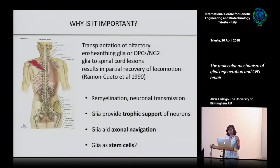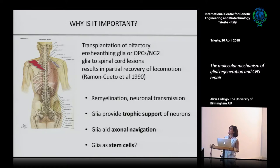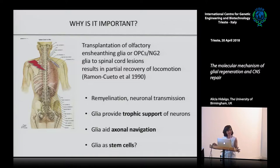Why is this so important? Transplantations of olfactory ensheathing glia, originally discovered by Ramon Cueto from the end of the 80s and 1990, were very regenerative - they led to recovery of behaviour in animal models, and this has been reproduced by transplantations in humans and transplantations of stem cells and NG2 glia. The question is: is it simply remyelination, or are these glial cells providing trophic support for neurons, maintaining neuronal survival, aiding axonal navigation, or even promoting neurogenesis - the formation of new neurons upon injury?